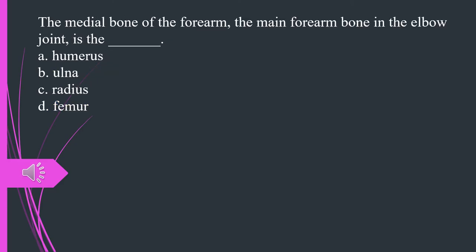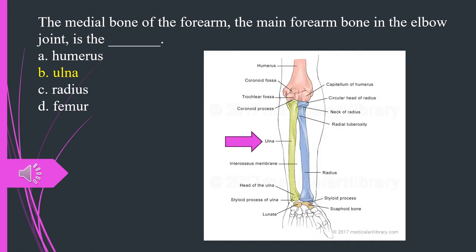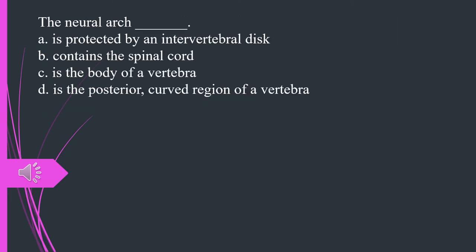The medial bone of the forearm, the main forearm bone in the elbow joint, is A. Humerus. B. Ulna. C. Radius. D. Femur. The answer is B. Ulna.